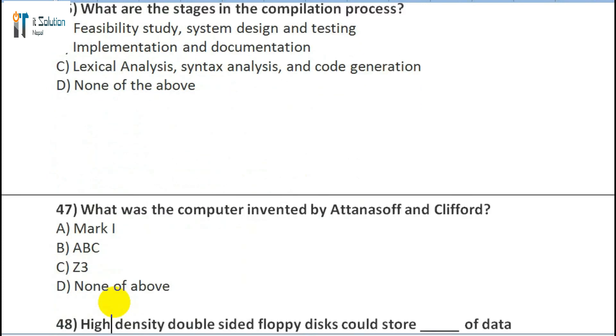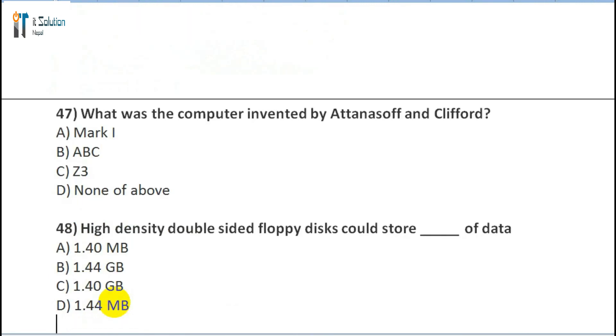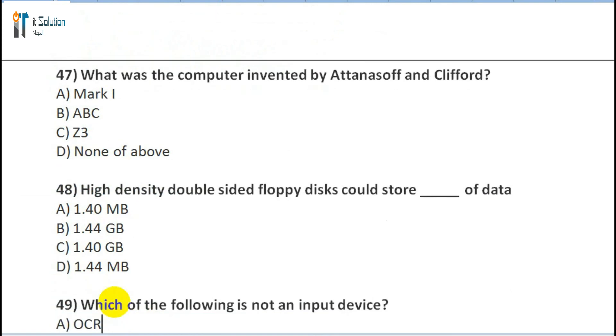Question 47: What was the computer invented by Atanasoff and Clifford? A) Mark I, B) ABC, C) Z3, D) None of the above. Question 48: High density double-sided floppy disks could store ___ of data. A) 1.40 MB, B) 1.44 GB, C) 1.40 GB, D) 1.44 MB.